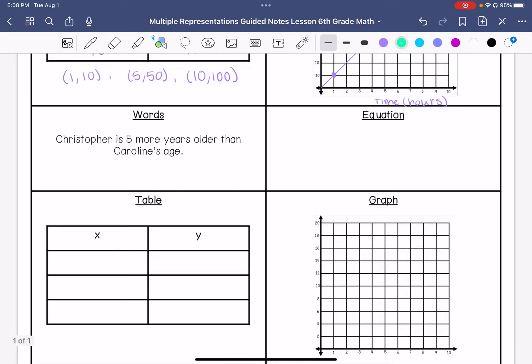Alright, this one is Christopher is 5 more years older than Caroline's age. So y is going to represent Christopher's age, because it is affected by Caroline's age, because he is 5 more years than Caroline. x is Caroline's age.